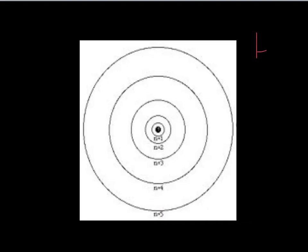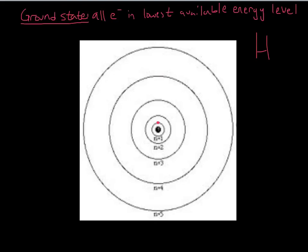Let's say, for example, that this is hydrogen. Hydrogen has one electron, and that one electron is going to be found in the first energy level. Electrons are lazy — they want to have the lowest amount of energy as possible, which means you're never going to find hydrogen's one valence electron out at a higher level, because they naturally want to go as close to the nucleus as they can. What we call this is the ground state, meaning all the electrons are in the lowest available energy level.